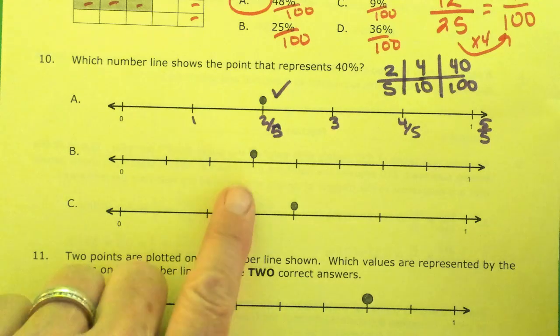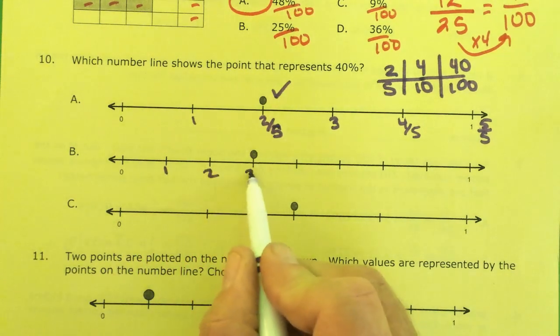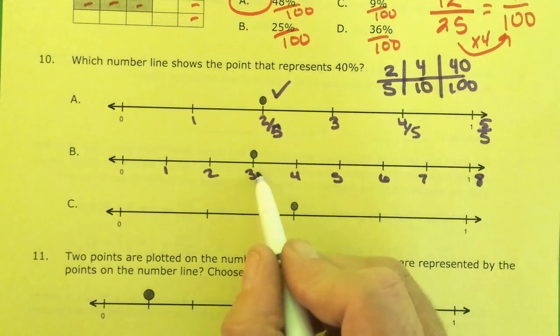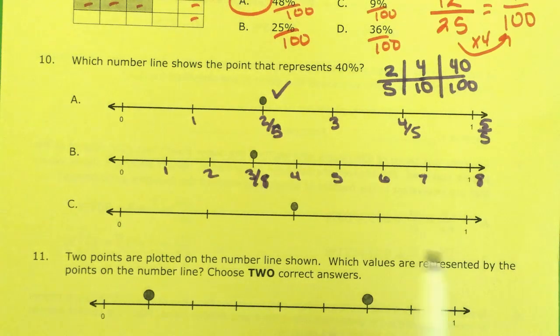2 out of 5 is the same as 4 out of 10, which is the same as 40 out of 100, which is 40 percent. That looks good. Let me check the others to be sure. This is 3 eighths, which is not 40 percent. 3 eighths is 0.375.